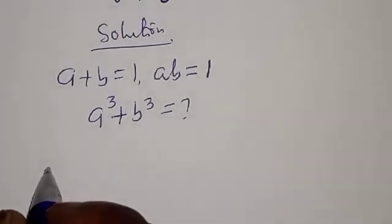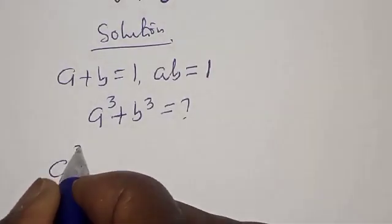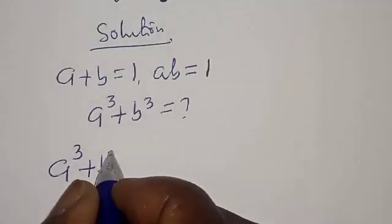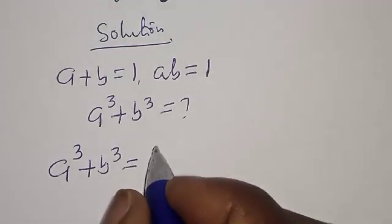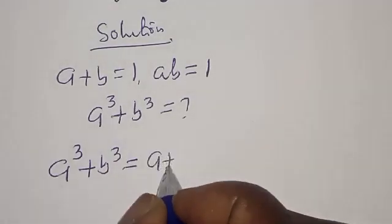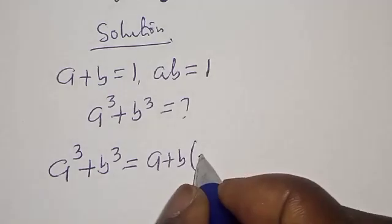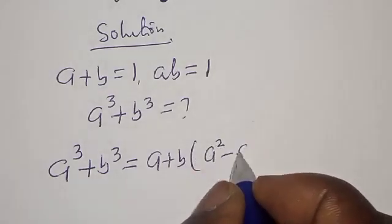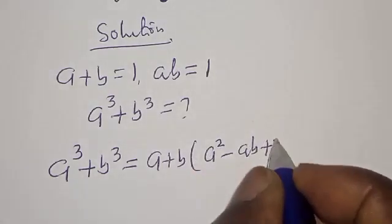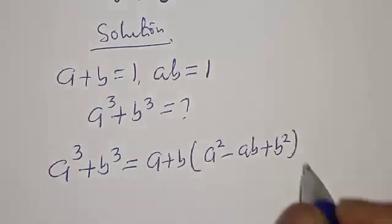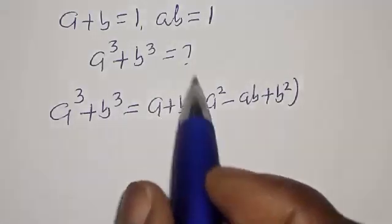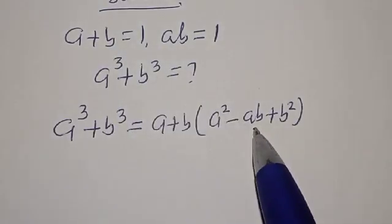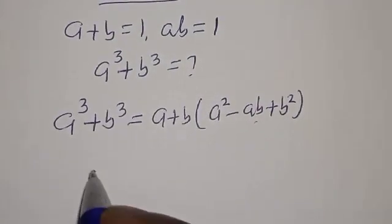Now remember that a raised to power 3 plus b raised to power 3 is equal to a plus b, into a squared minus ab plus b squared. Here a plus b is equal to 1 and ab is also 1.